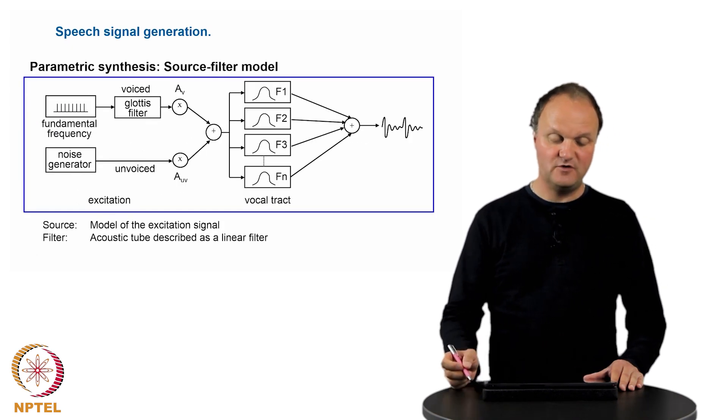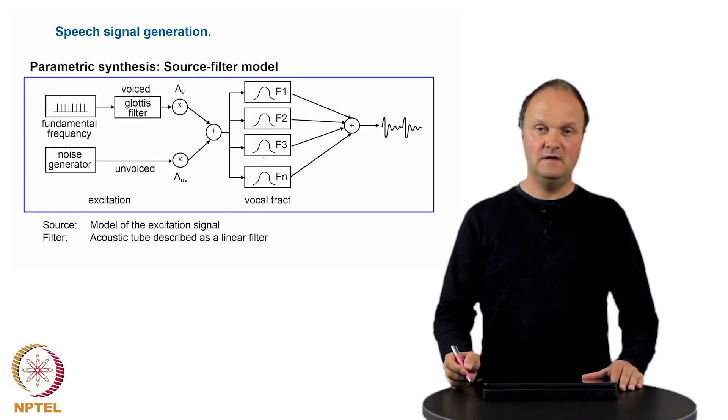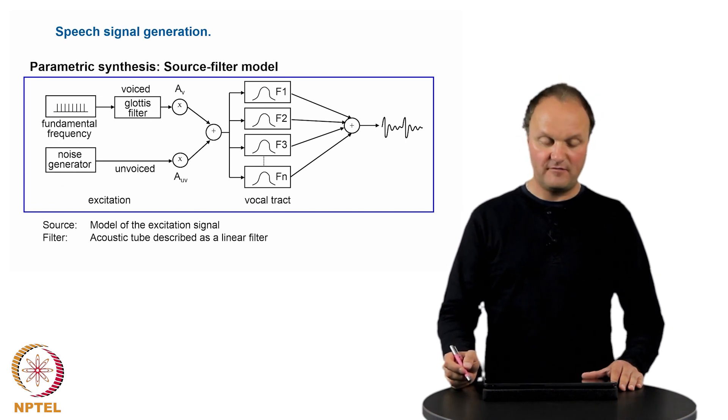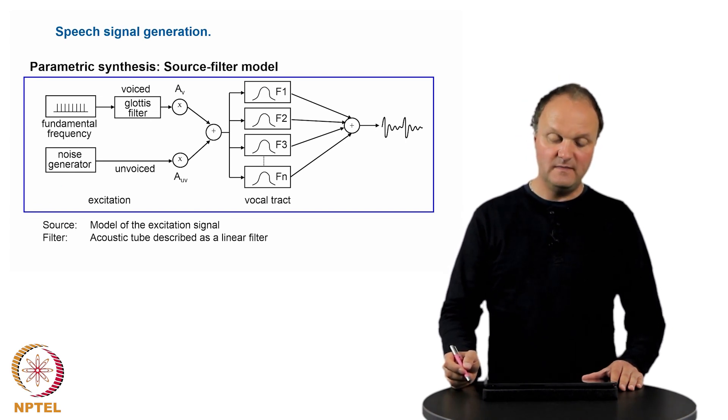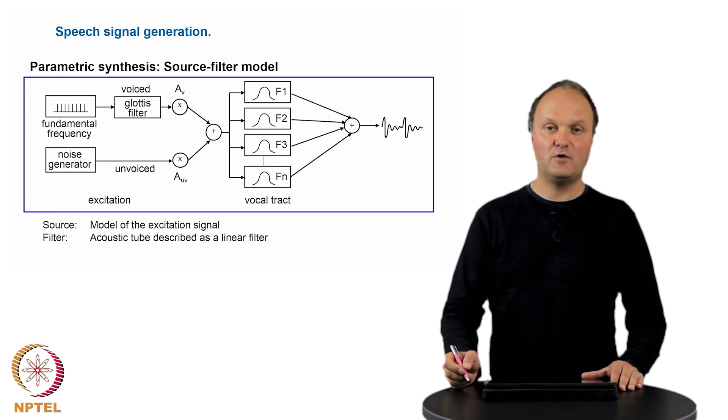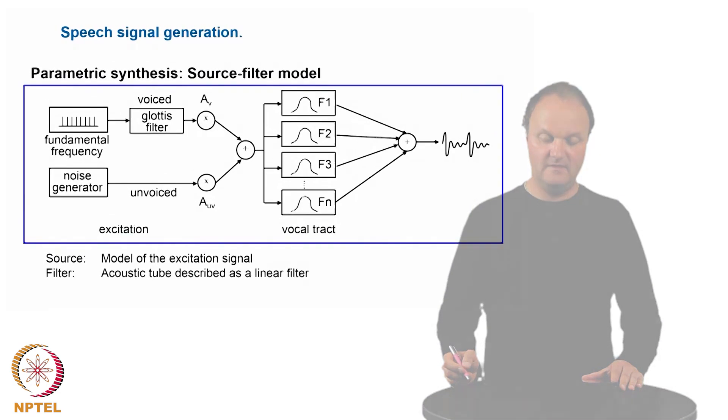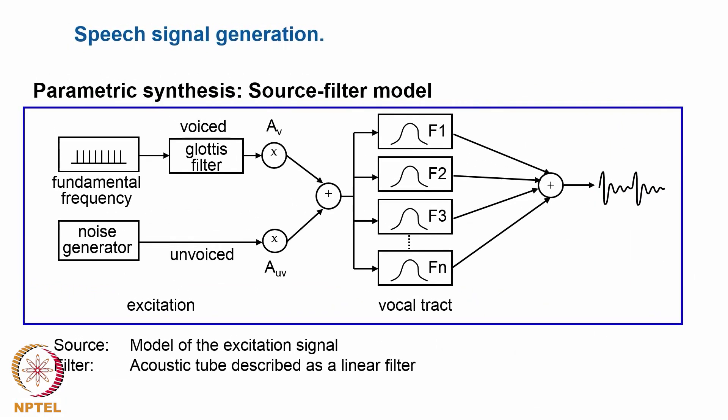The first such approach, the parametric synthesis, is one which you already know from chapter 6 of this course because it's mainly based on the source filter model of speech production. The idea is to identify all the parameters which are used in the source filter model for producing a particular sound and putting values which correspond to that particular sound. So we first need to differentiate whether this is a periodic sound, then we need to decide about the fundamental frequency.